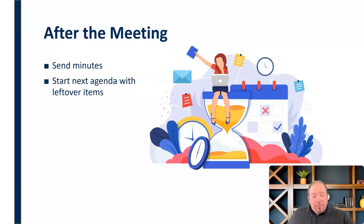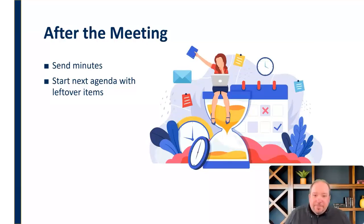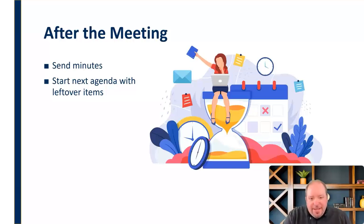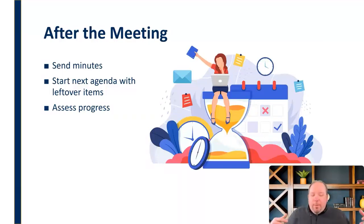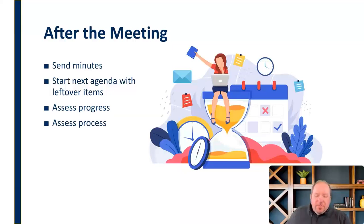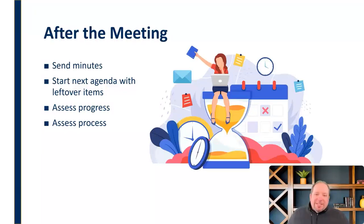Right after a meeting, you want to start the next agenda. You're making notes throughout saying, okay, this came up but didn't get discussed, or this is an idea we want to pursue later but wasn't part of today's agenda. You need to start preparing the next agenda, especially with those leftover items — anything that didn't get completed should be at the beginning of the next agenda. You also want to assess your progress: how far did you get in your agenda and how far did your group move forward? And assess your process — what worked, what didn't, and what can you do better next time?